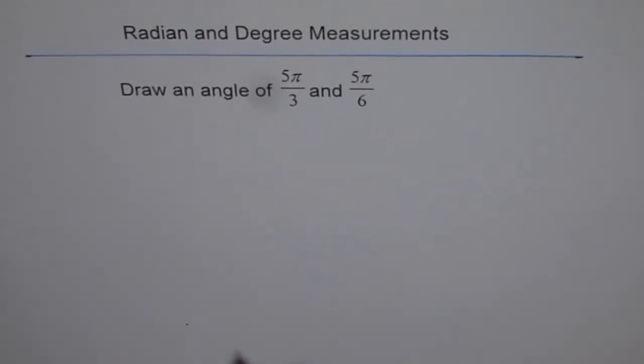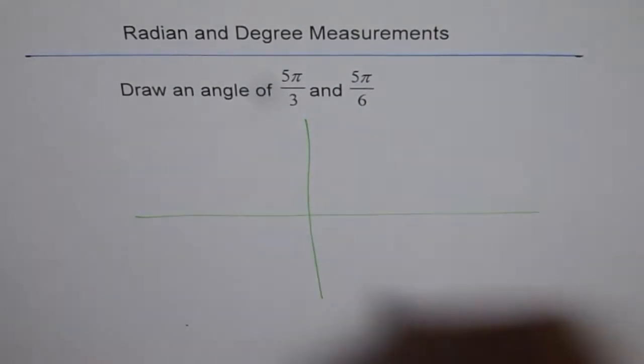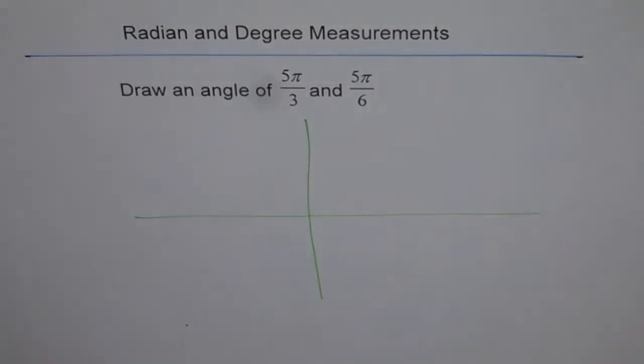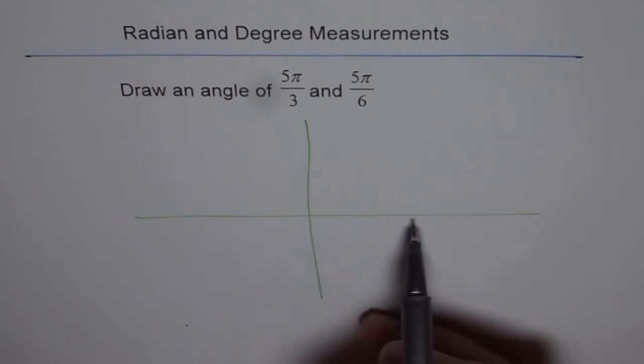When we say draw an angle of this, we mean in standard position. So let's draw it in standard position. This is our coordinate plane. The vertex has to be on the origin. That's the vertex position. And the initial arm will be along the x-axis.